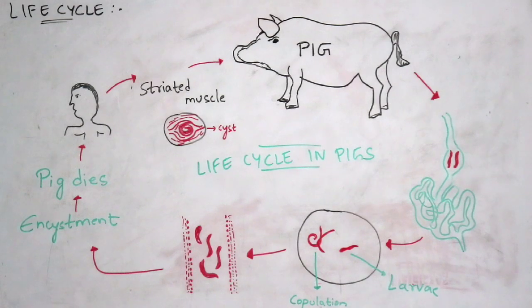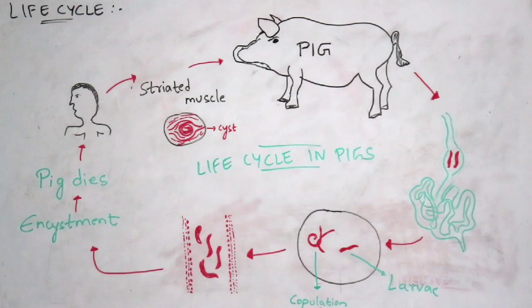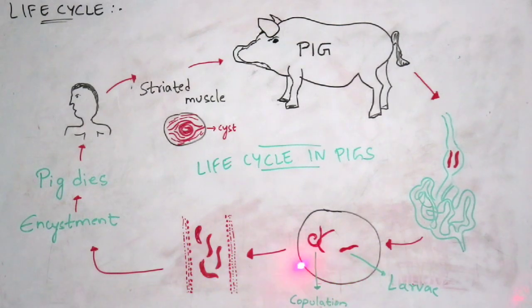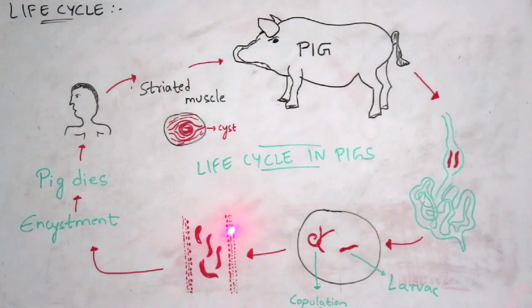In the pig's small intestine, sperm released by the testes enter into the female worm's ovary, and egg formation takes place. After copulation, newly born larvae are released by the female worm and enter into the bloodstream.